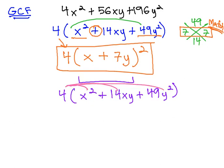Distributing the 4 would complete our check, giving us 4x squared, plus 56xy, plus 196y squared.